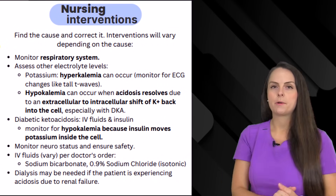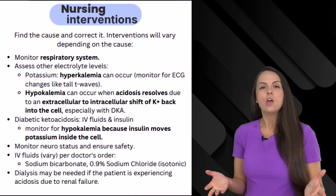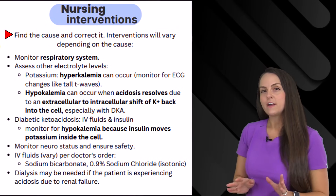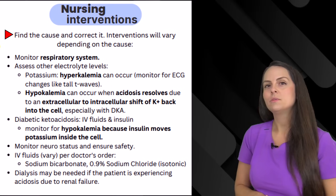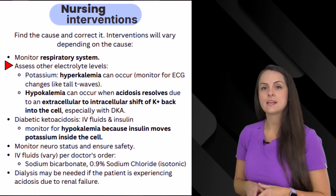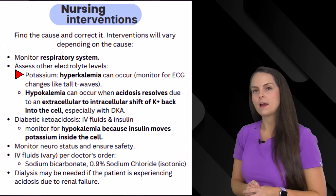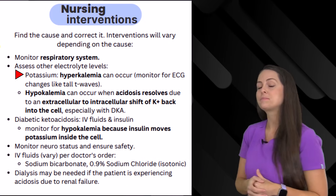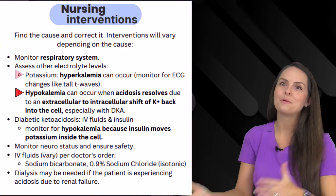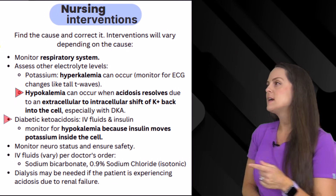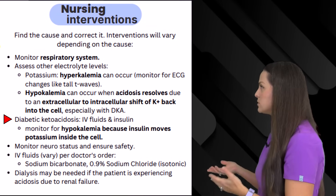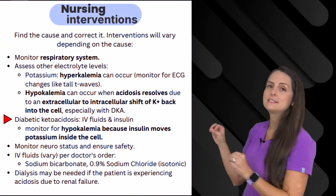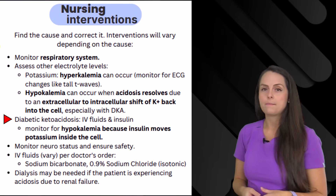For nursing interventions, the key is finding the cause and treating it, since many causes can lead to metabolic acidosis as we covered with the ACIDS mnemonic. Monitor the patient's electrolyte levels, particularly potassium — watch for hyperkalemia. However, once the acidosis starts resolving, especially in DKA patients, you may see hypokalemia. This is because in DKA, the interventions include IV fluids and insulin, and insulin causes potassium to move back inside the cell, lowering blood potassium levels — so monitor for that.